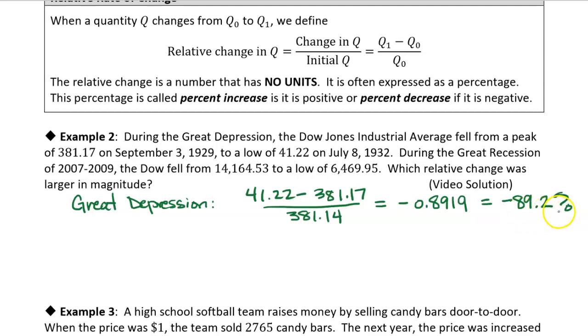So essentially what we're saying is that the Dow lost 89.2% of its initial value, right? If we took 89.2% of 381.17 and then subtracted it, we would end up with the 41.22. So the Dow lost 89.2% of its initial value.